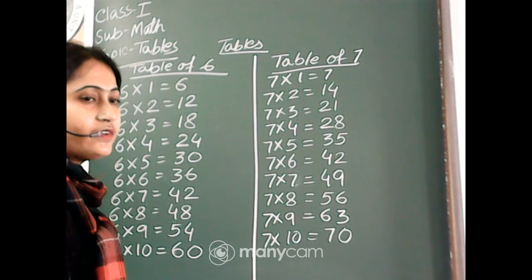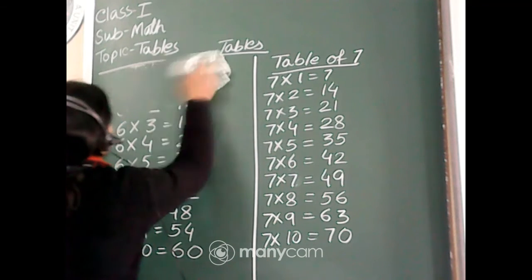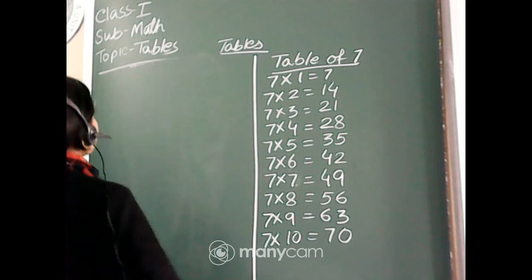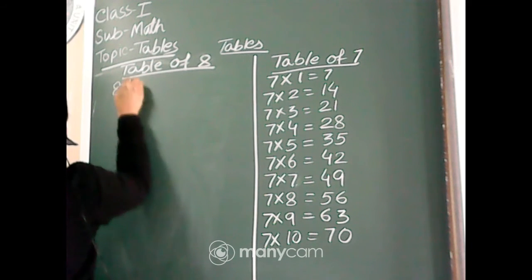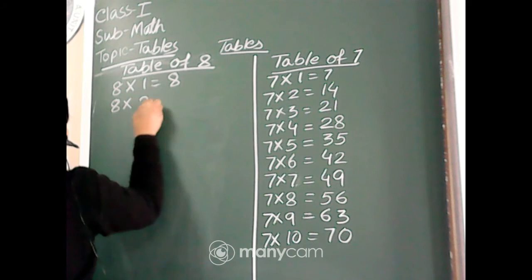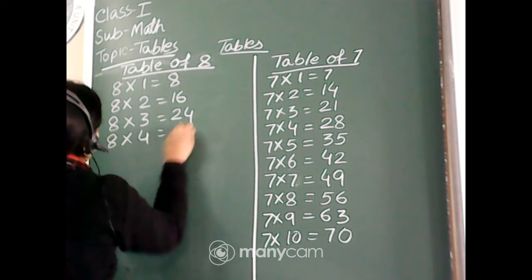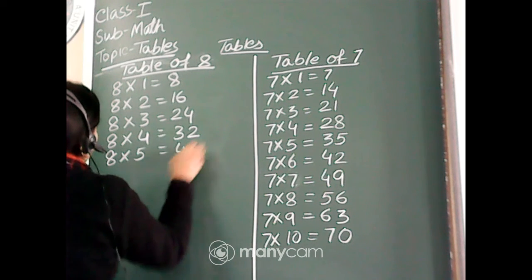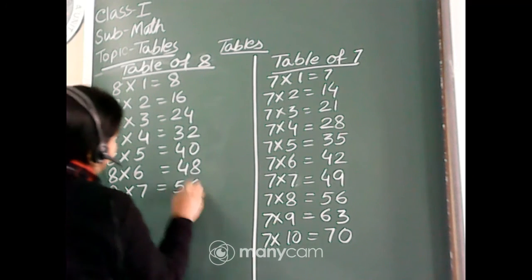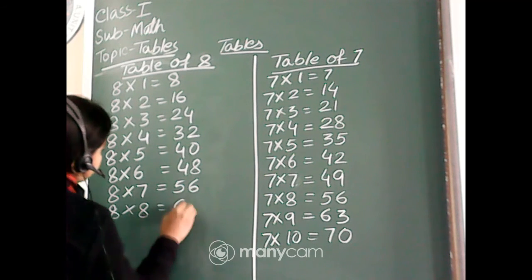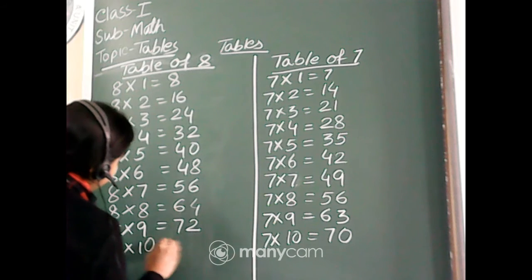Now I will wrap the board and we will write table of 8. Now, table of 8: 8 ones is 8. 8 twos are 16. 8 threes are 24. 8 fours are 32. 8 fives are 40. 8 sixes are 48. 8 sevens are 56. 8 eights are 64. 8 nines are 72. 8 tens are 80.